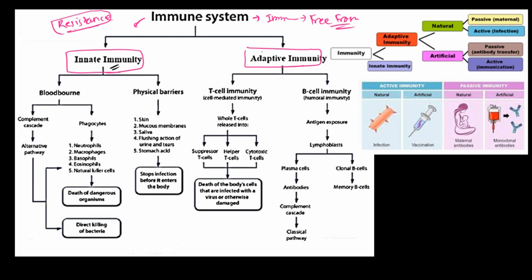Similarly, we have another type called adaptive immunity. Adaptive immunity means acquired immunity, which is acquired after birth throughout life by the subsequent actions of different microorganisms and antigens.